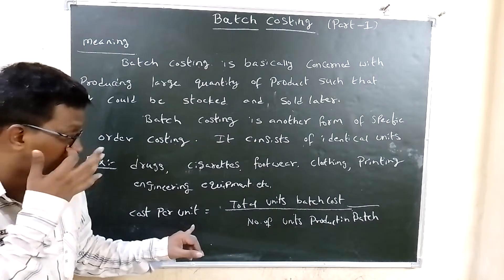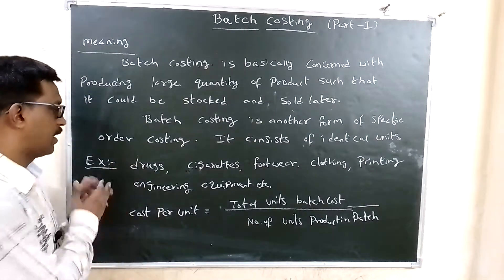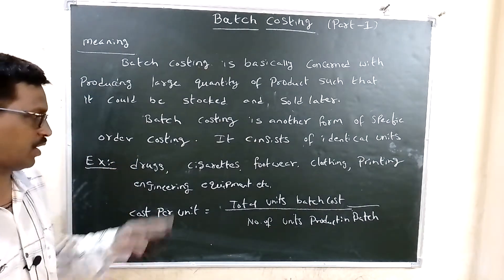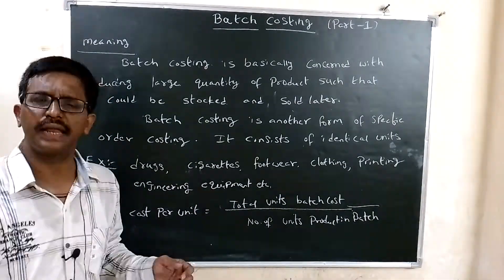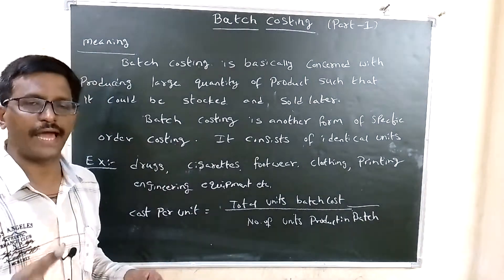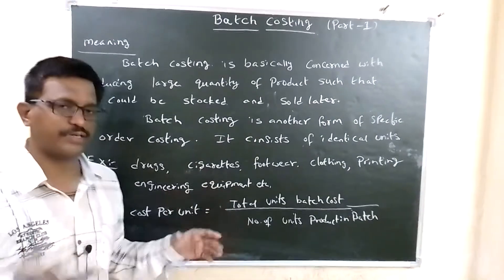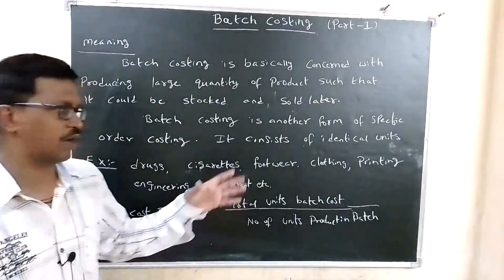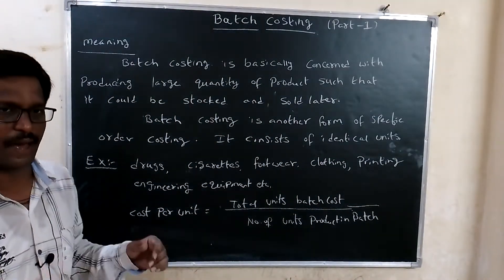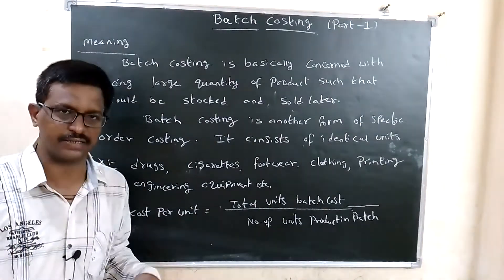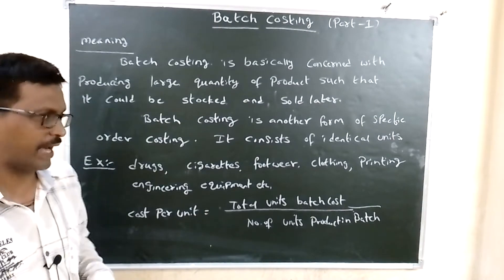We get the cost per unit. Examples include medicines, cigarettes — these are bulk goods. Footwear is also a bulk good, as are clothes. Printing of documents, papers, and calendars — these are also bulk goods.